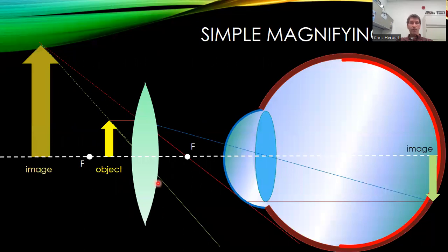Again, this is what we're looking at with the simple magnifier. There's nothing complicated here. We have a convex lens. This is going to basically provide us with our virtual image.